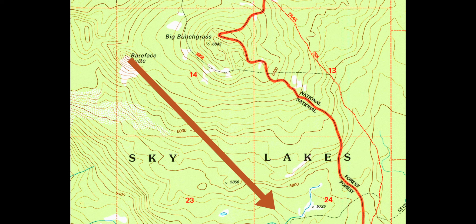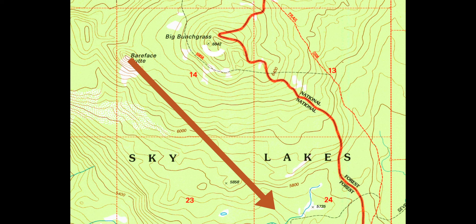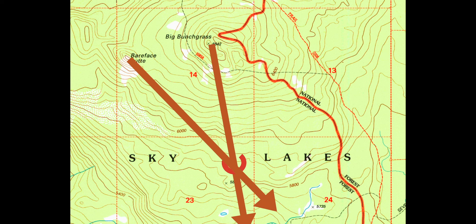From my same location I'll take my compass again and shoot an azimuth to the second hilltop. That azimuth is going to be 45 degrees. I get a back azimuth which is 225 degrees. I take a straight edge and shoot an azimuth from that hilltop on a 225 degree azimuth. Where those two lines intersect is my location.